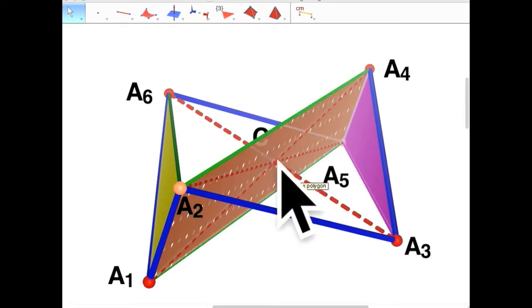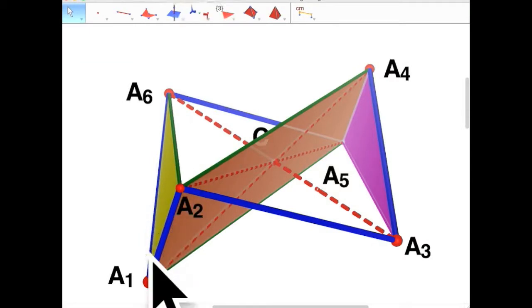We can also divide it up by connecting A1 A6 with A3 A4, and then hiding this one so that we get another perspective of it.